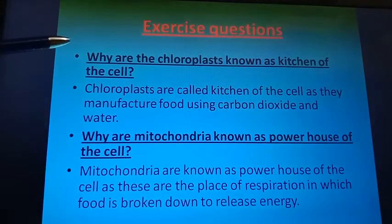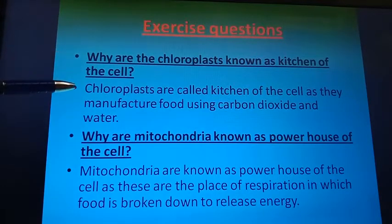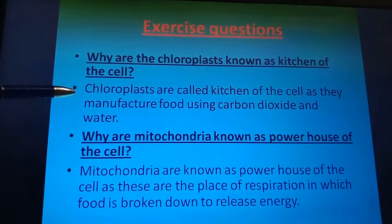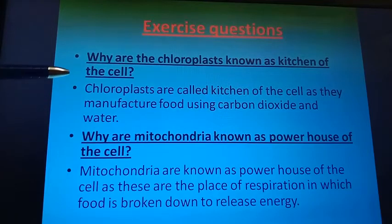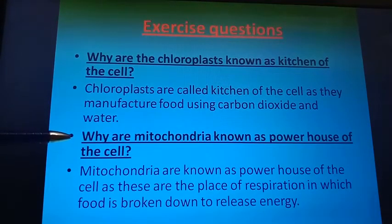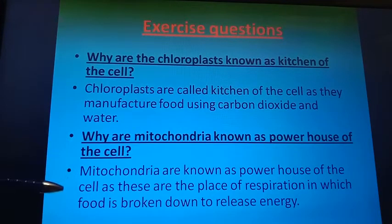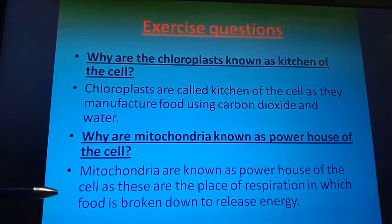Why are chloroplasts known as the kitchen of the cell? Chloroplasts are known as the kitchen of the cell as they manufacture food using carbon dioxide and water. Why are mitochondria known as the powerhouse of the cell? Mitochondria are known as the powerhouse of the cell as they are the site of respiration, in which food is broken down to release energy.